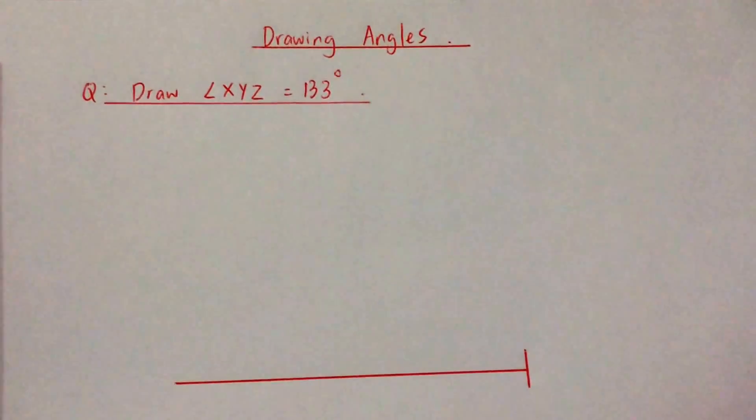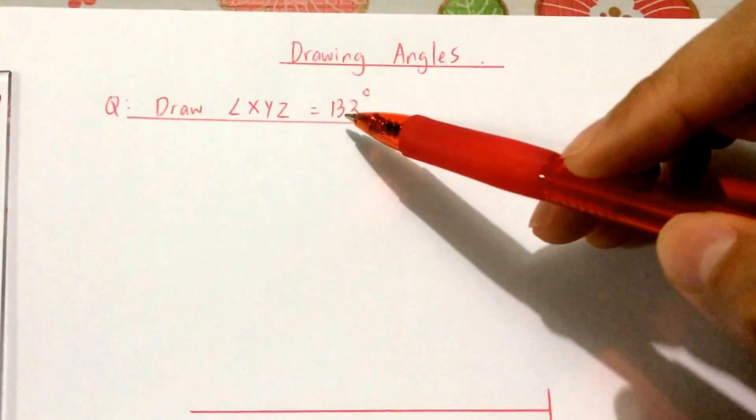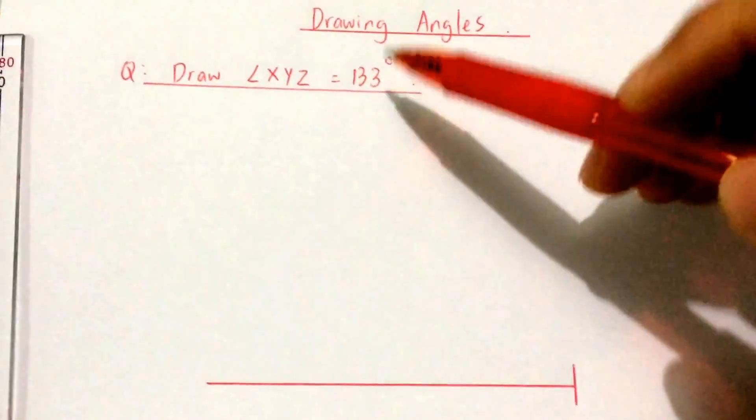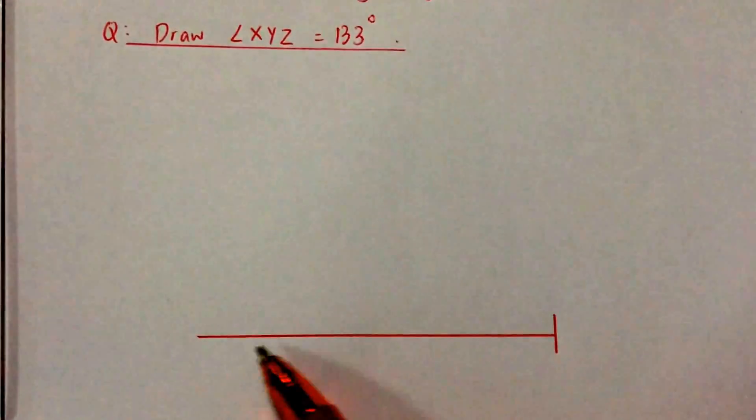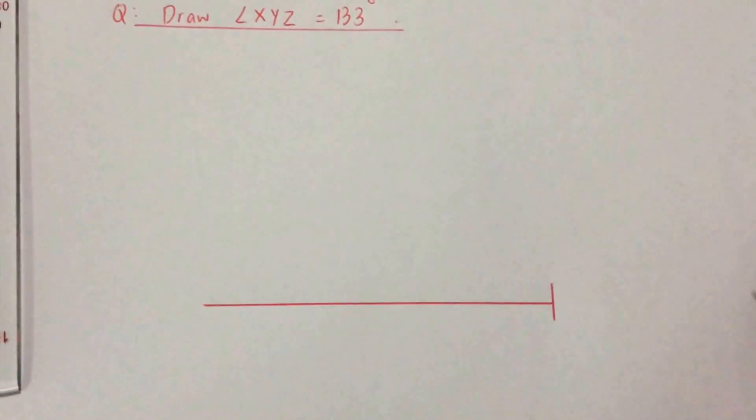In this video we're going to look at another example of how to draw angles. Let's say I want to draw an angle XYZ that is 133 degrees. So I start with a straight line, a small line here, I label this to be zero.